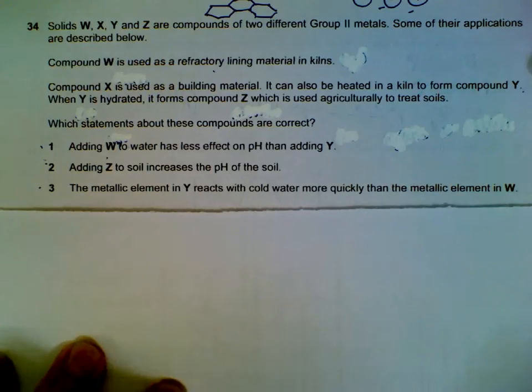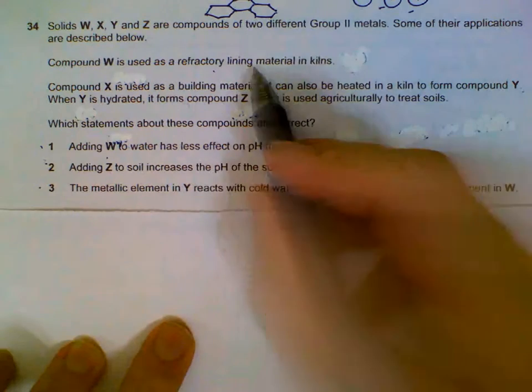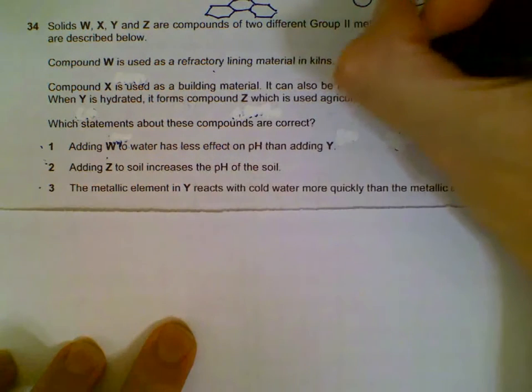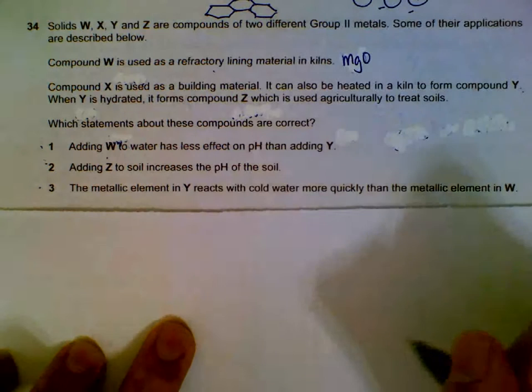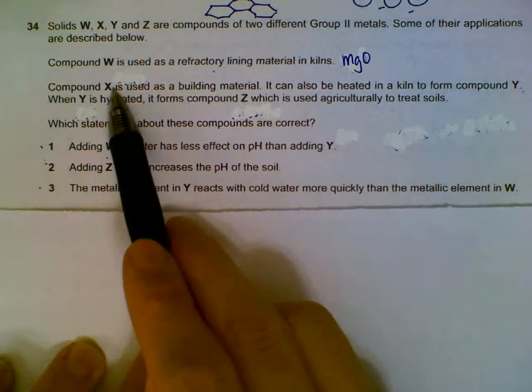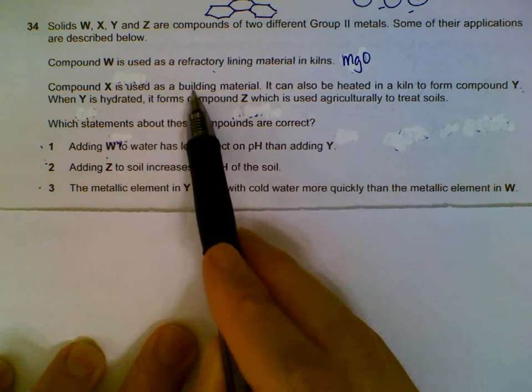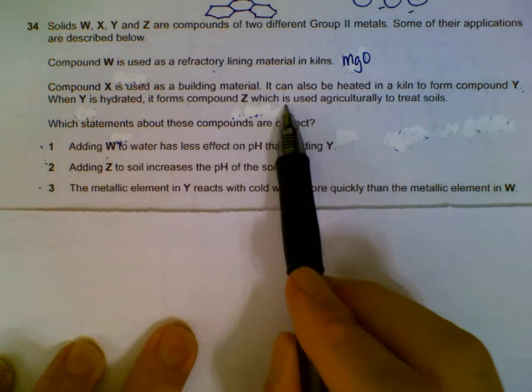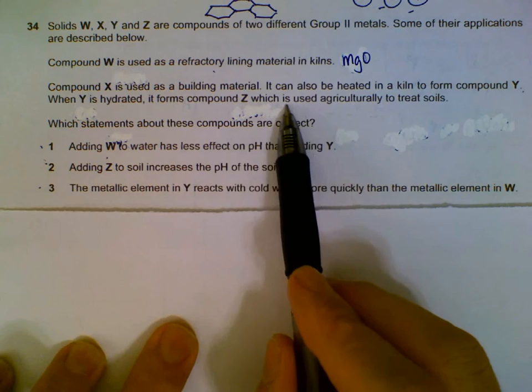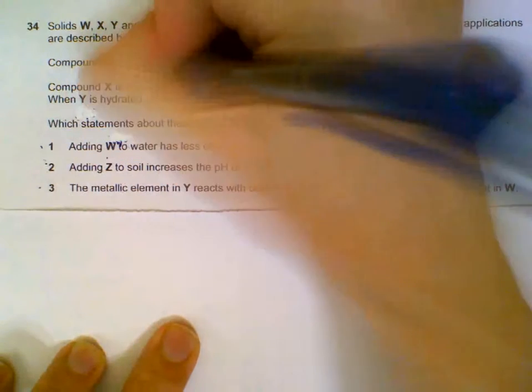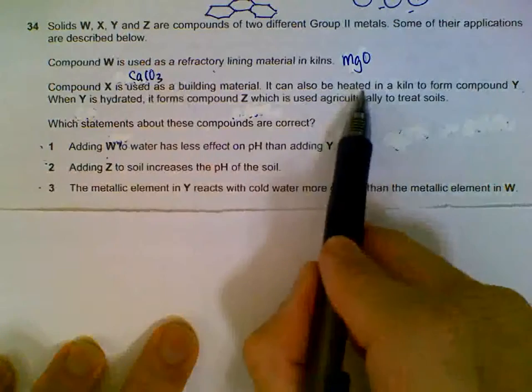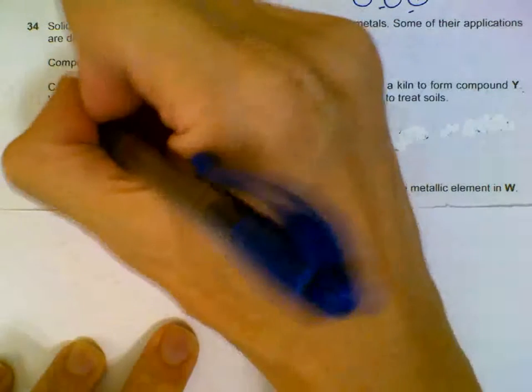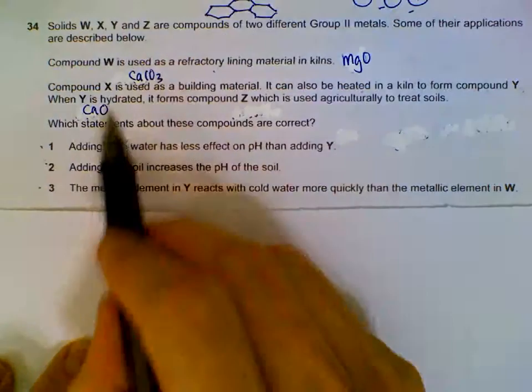Group 2 metals - the lining material will be magnesium oxide, one of those we have to remember. X is a building material and is used to treat soils that are too acidic, so it will be compounds of calcium. The building material is calcium carbonate. When we heat it up, we will get calcium oxide and carbon dioxide decomposition.